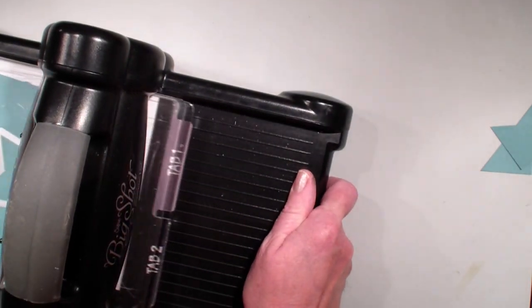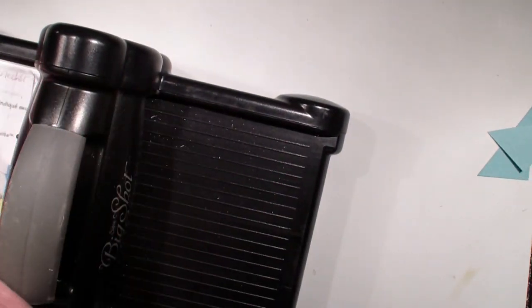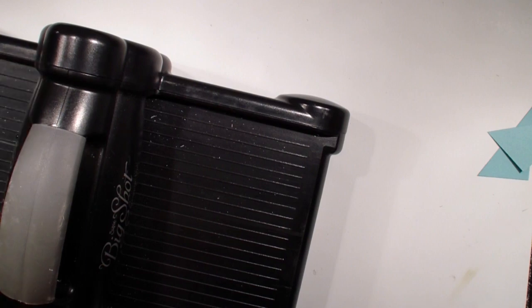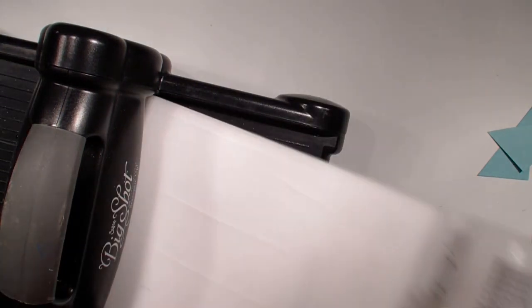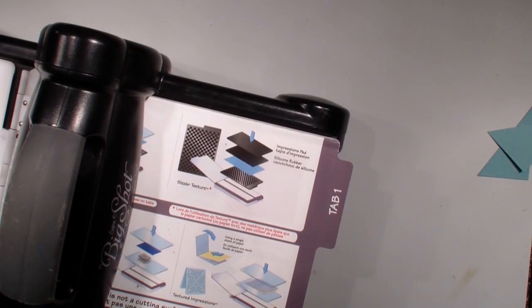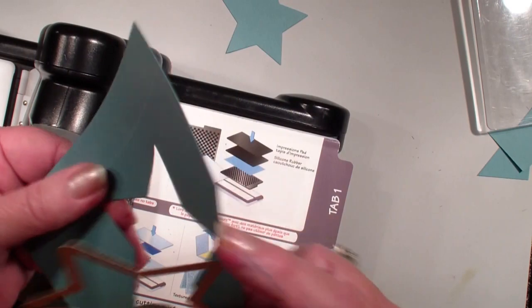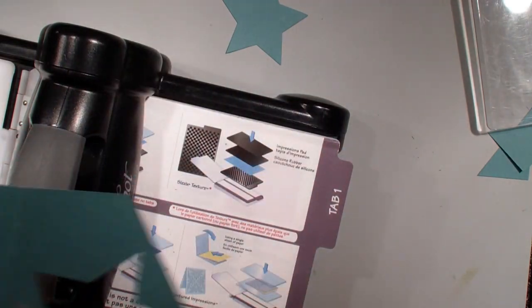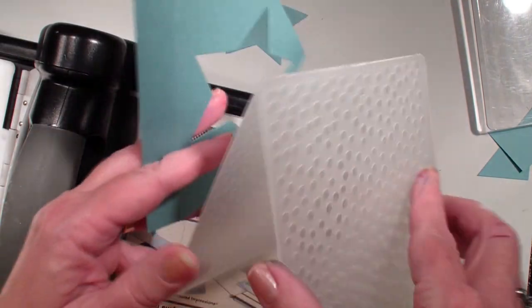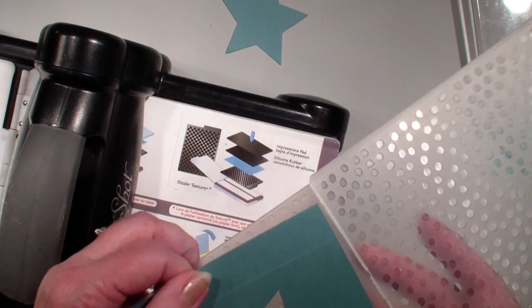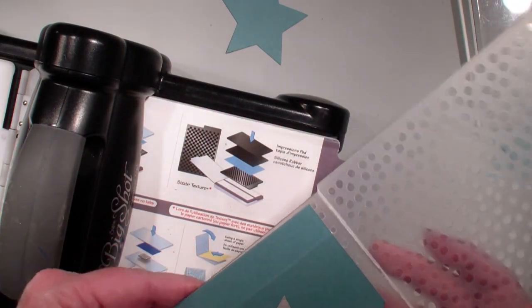I always like to cut my framelits first and then do my dry embossing. Going to bring that piece back in and I'm going to bring in my decorative dots folder to emboss that front.